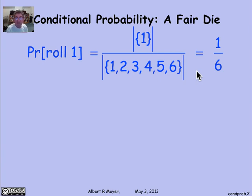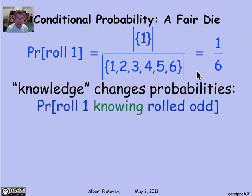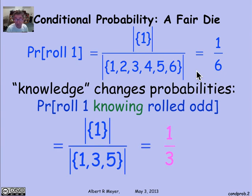But suppose I give you some additional information. Knowledge about the roll can change the judgment of probabilities. Suppose I tell you that I rolled an odd number — now what's the probability that I rolled a 1? Given that it's an odd number, the only possibilities are 1, 3, and 5, so the probability has changed to 1/3. That should be a straightforward enough idea.